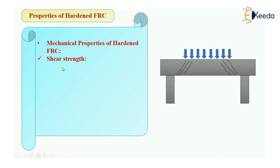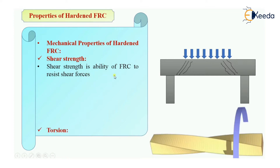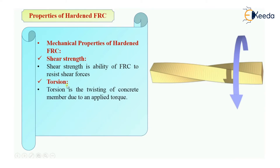The next mechanical property is shear strength. Shear strength is the ability of fiber-reinforced concrete to resist shear forces. When external force is applied, there are chances of developing diagonal or shear cracks, as visible in the picture. If my fiber-reinforced concrete is able to take shear forces without any cracks or failure, then it has good shear strength — simply, resistance against shear force.